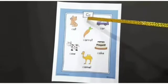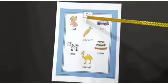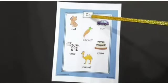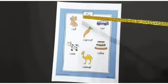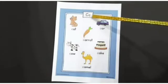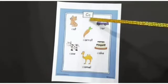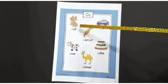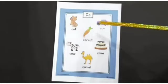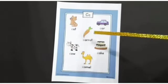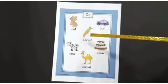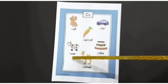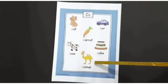Alphabet C. Capital C, small c. C says C. C for cat, C for car, C for carrot, C for cake, C for cow, C for camel.